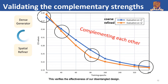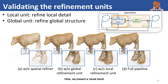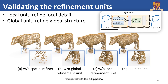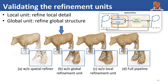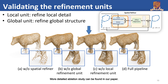Here, we present a visual result to validate the effectiveness of the global and local refinement units. Compared with the full pipeline, when we remove the global refinement unit, the geometric structure of the bull's feet cannot be well preserved. When we remove the local refinement unit, the fine details are lost. More detailed ablation study can be found in our paper.